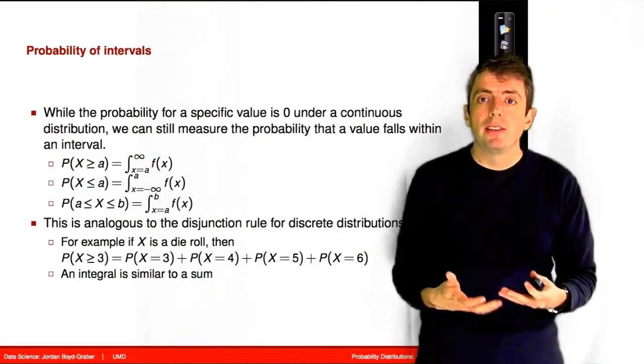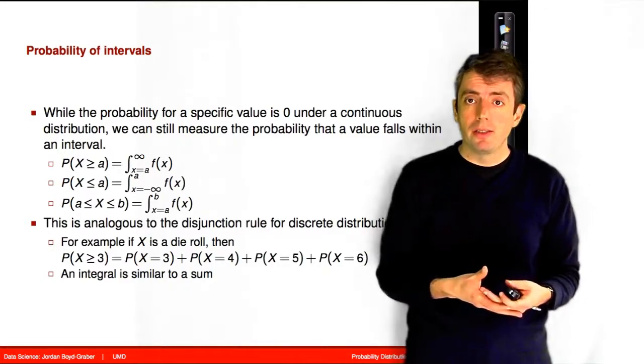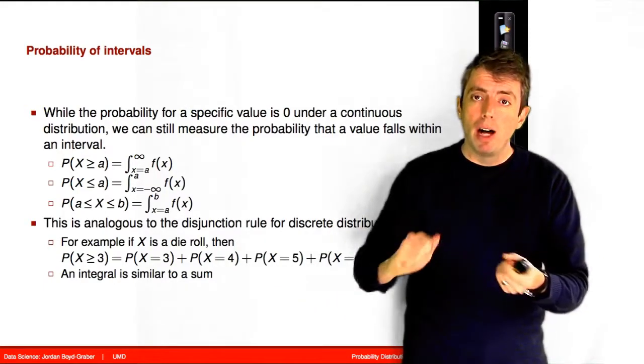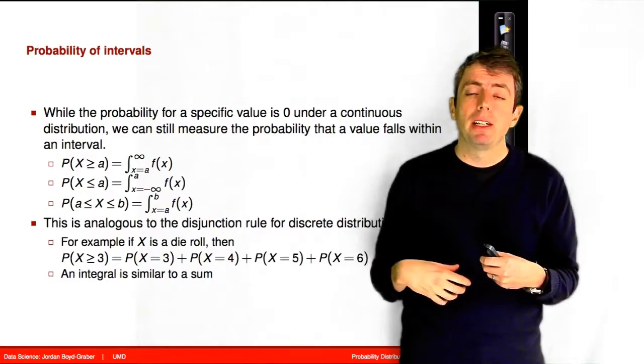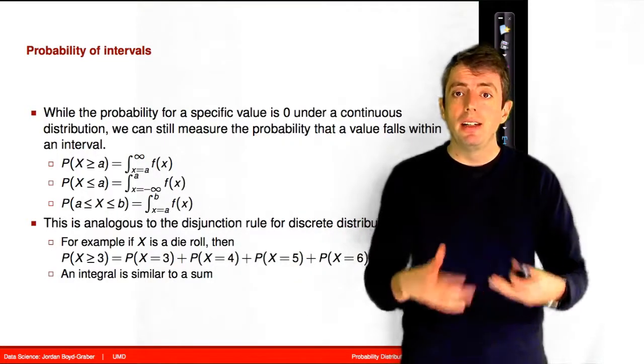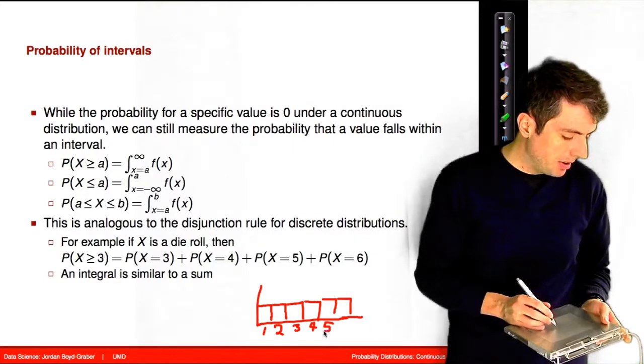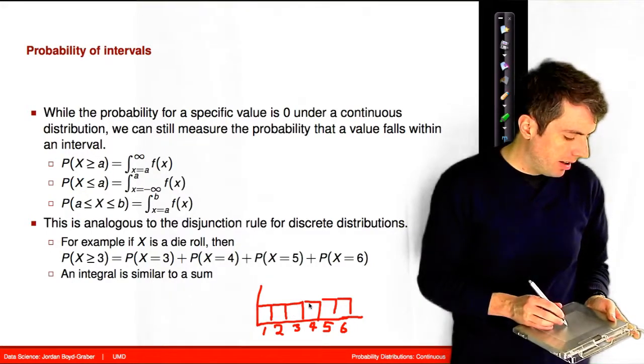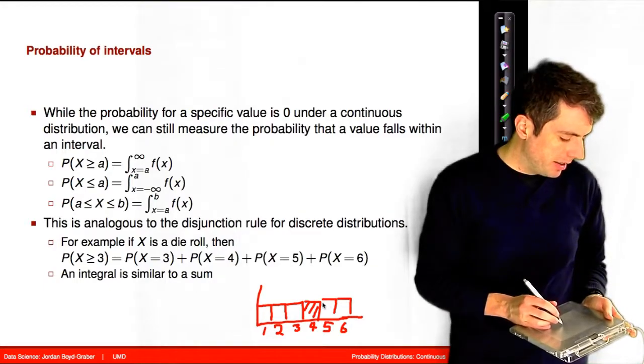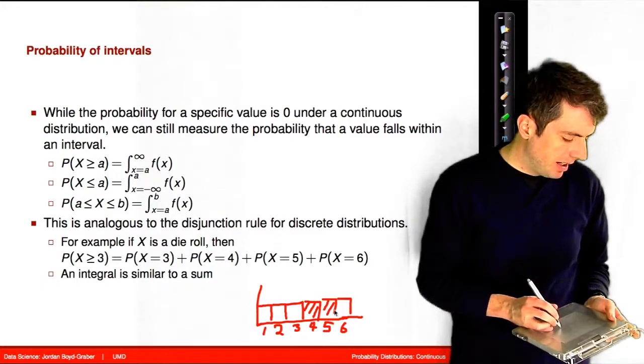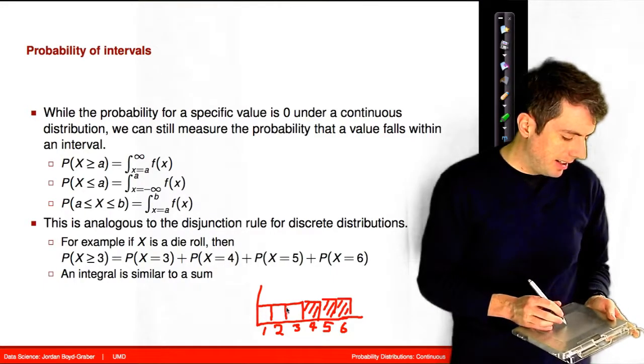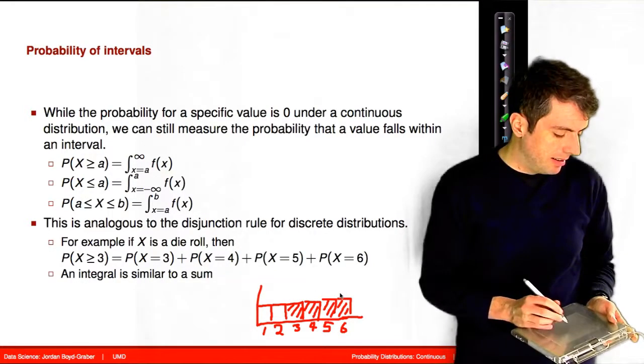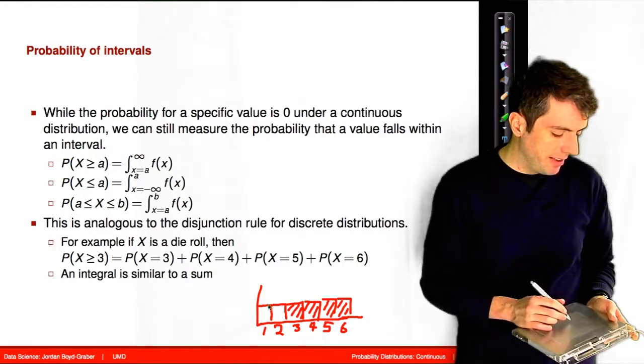Don't be too scared of these integrals. This is exactly like what we were doing for discrete distributions. For example, when we took the role of a die and combined various outcomes together, that's exactly what's happening here. We're just using a different mathematical notation and intuition than we were before. So for example, if we take a role of a single die and we look at all of the outcomes greater than or equal to 3, that is exactly like taking an integral. So we take all of these values and add them together and the total probability is the sum of all of these things together.